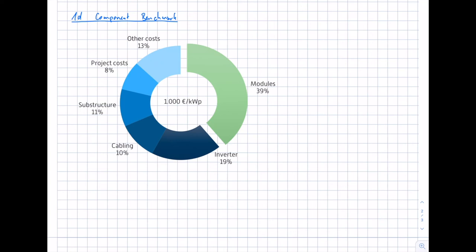This varies regarding the type of project, the location, and the country where you install the PV system. What is very important is a quality check of the components — primarily modules and inverters. Do they fit together? What about quality and the track record of the manufacturer? Have there been any quality issues in the past? What about warranties? This information must be included during the planning phase to decide what is the best component for the project under the given conditions of location, radiation, and interconnection.